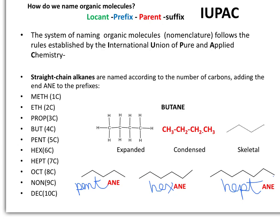When naming an unbranched alkane like this one, we always count how many carbons long it is. We use one of these prefixes according to the length of the hydrocarbon and place the ending -ane. In this example we have five carbons, so the prefix is pent-, giving pentane. Increasing by one carbon gives hexane, heptane, and so on.